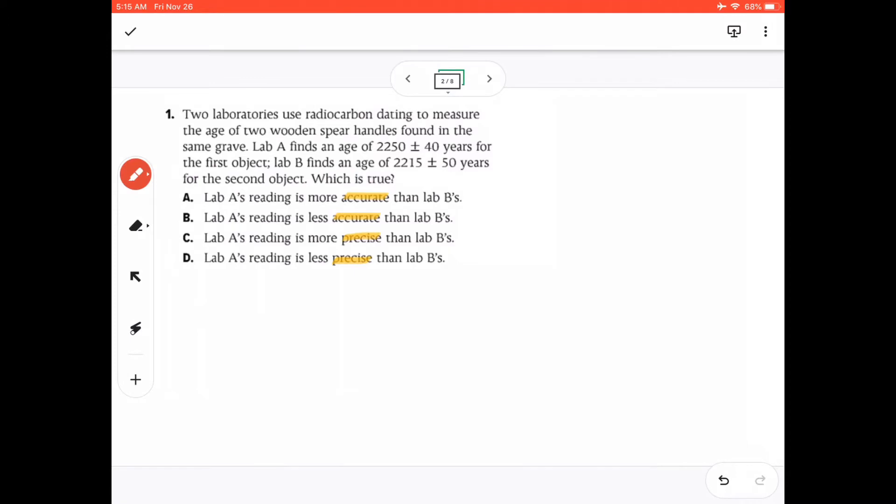The definition of precision is the degree of exactness with which a quantity is measured, whereas accuracy is the extent to which a measurement matches the true value. So if we are going to consider lab A for lab A,